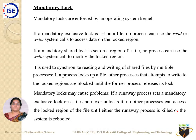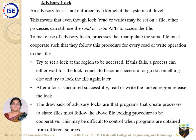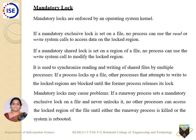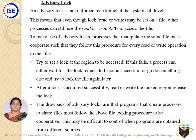This continues until either the runaway process is killed or the system is rebooted. An advisory lock is not enforced by the kernel. When using read or write APIs to access a locked file, an advisory lock says only the read API can be used — no write API can work on that locked region. The drawback of advisory locks is that all cooperating processes must follow the file locking procedure, which may be difficult when programs come from different sources.